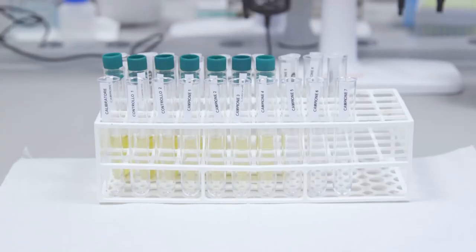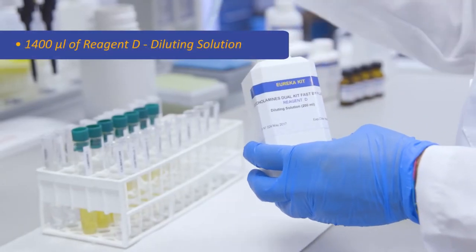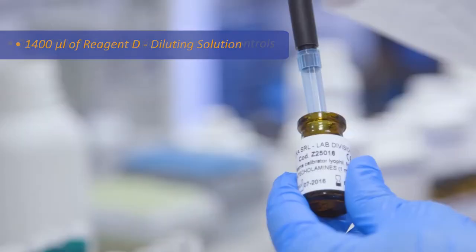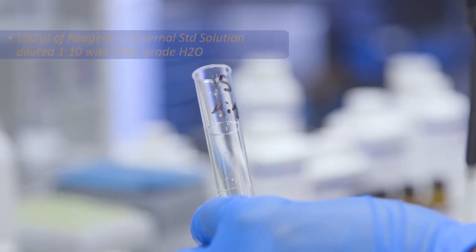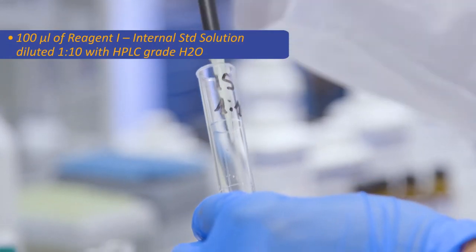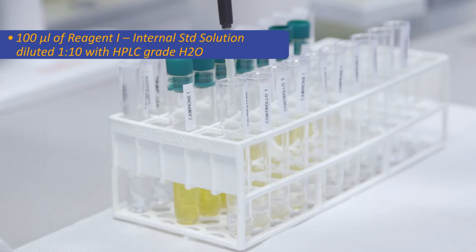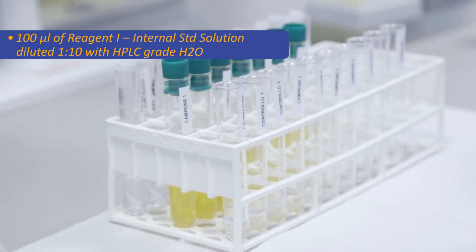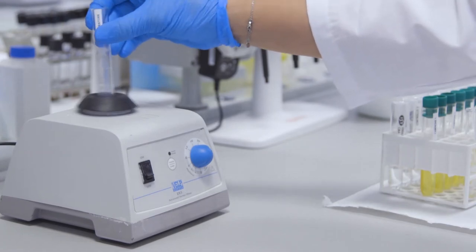Now we dispense in sequence in all the tubes 1400 microliters of reagent D diluting solution, only 600 microliters of calibrator samples and controls, 100 microliters of reagent I internal standard solution diluted 1 to 10 with HPLC grade H2O, then place in a vortex for five seconds.